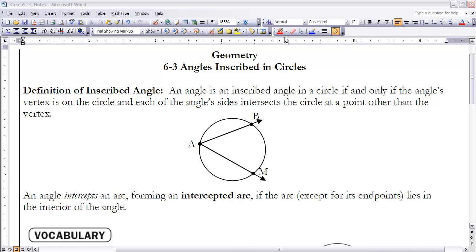The first thing we need to do is define what an inscribed angle is. An angle is an inscribed angle in a circle if and only if the angle's vertex is on the circle and each of the angle's sides intersect the circle at a point other than the vertex. I have an inscribed angle here, angle BAM. That angle is an inscribed angle.